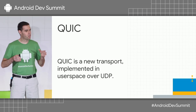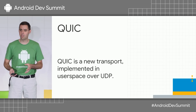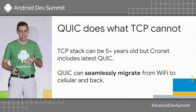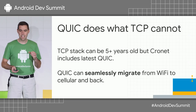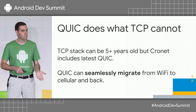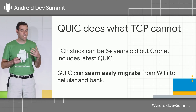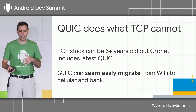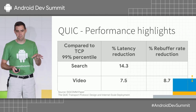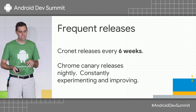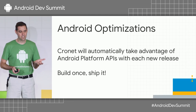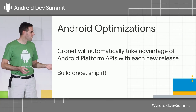Part of the coolness of Cronet is that it comes with support for QUIC, which is a new transport we've implemented in user space on top of UDP. It does some things that TCP can't. QUIC is a modern transport — it provides some new features and better performance. In particular, with QUIC connection migration, you can seamlessly switch back and forth between Wi-Fi and cellular. It has a bunch of awesome performance highlights. We release every six weeks, and it comes with state-of-the-art security.